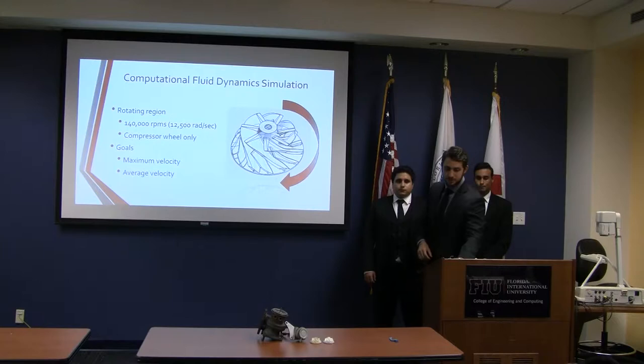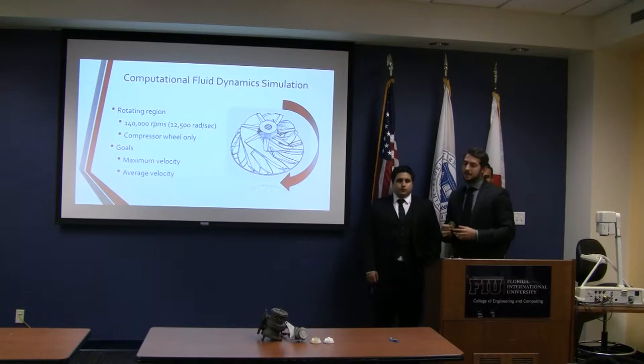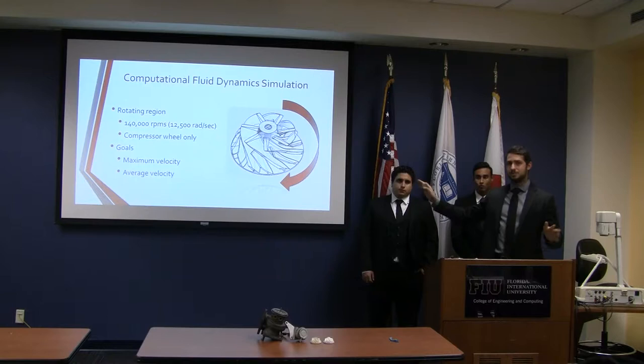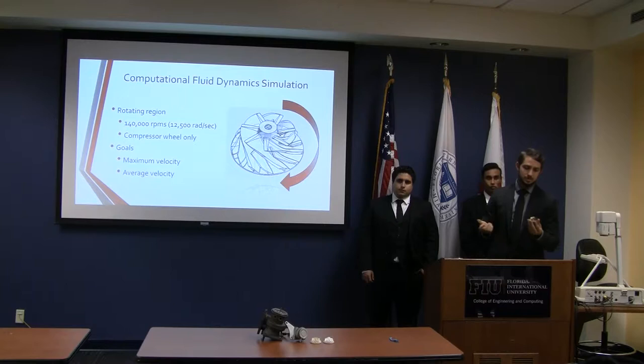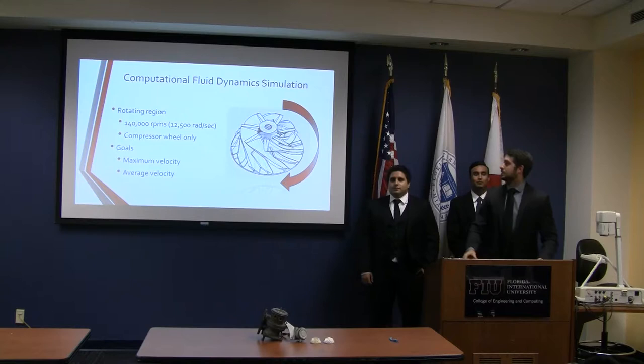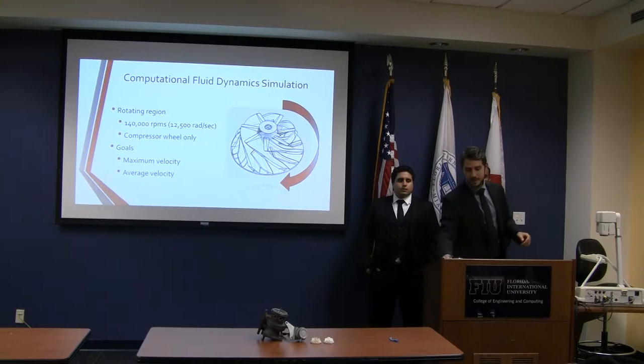For the rotational region, we established this wheel would rotate at 140,000 RPMs. The limit for this type of system is 150,000 RPM — beyond that you basically break the entire compressor wheel. At 140,000 RPM, that's approximately 12,500 radians per second. We were rotating the compressor wheel, and our goals were maximum velocity and maximum average velocity at the outlet.